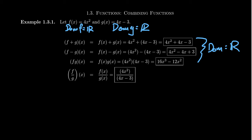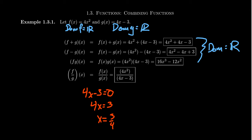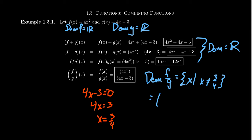Things get a little more complex for f divided by g. Although f and g have no restrictions, division does — we can't divide by zero. Looking at the denominator 4x - 3, we determine when it equals zero: add 3 to both sides to get 4x = 3, then divide by 4 to get x = 3/4. So the domain of f/g is all numbers not equal to 3/4, written in interval notation as (-∞, 3/4) ∪ (3/4, ∞).